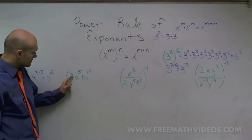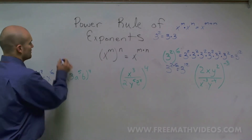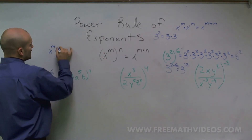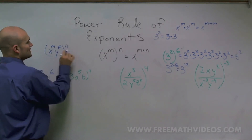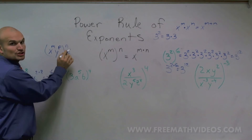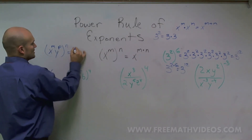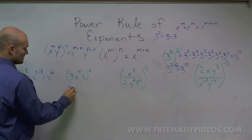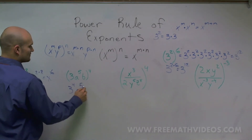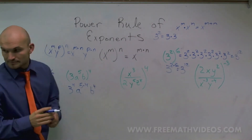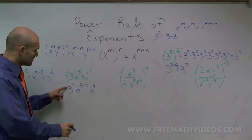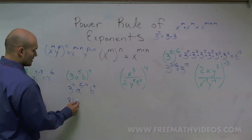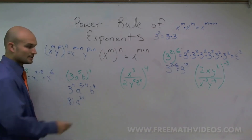Here I have 3 times a to the 5th times b to the 4th, all raised to the 4th power. One thing we need to remember with the power rule is that if you have x to the m times y to the p, all raised to the n, that n goes to both exponents — you have to distribute your exponent to all terms. So I get 3 to the 4th power, times a to the 5 times 4, and b to the 4th times 4. 3 to the 4th is 81, a to the 20th, and b to the 4th — wait, b to the 16th.